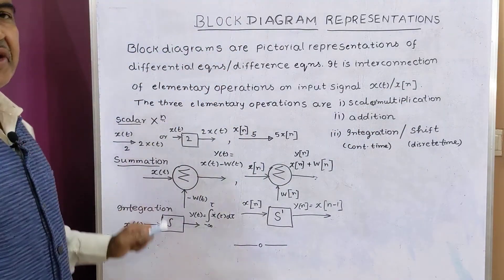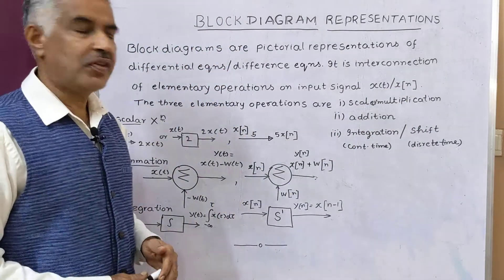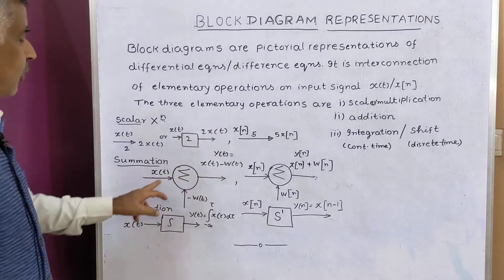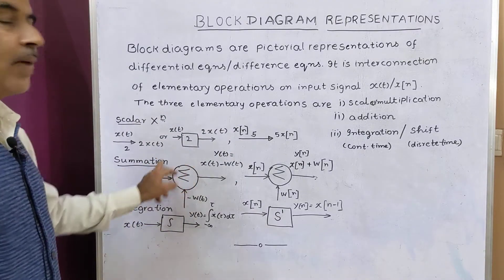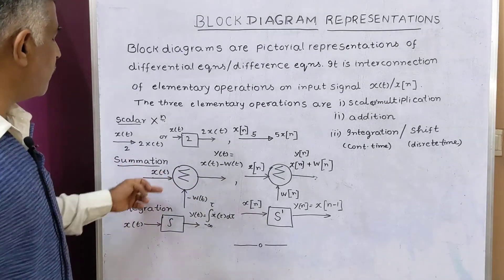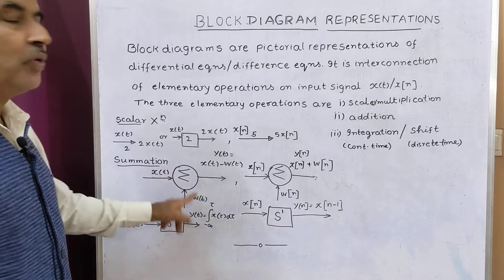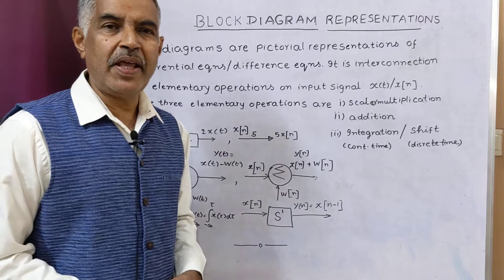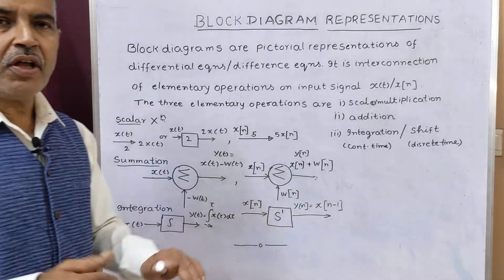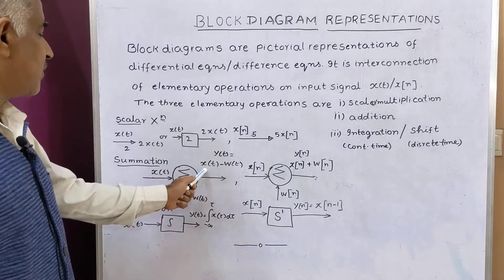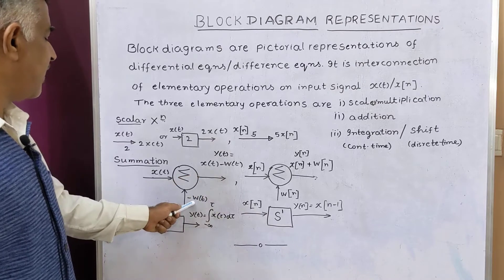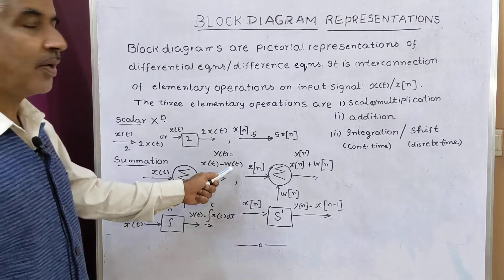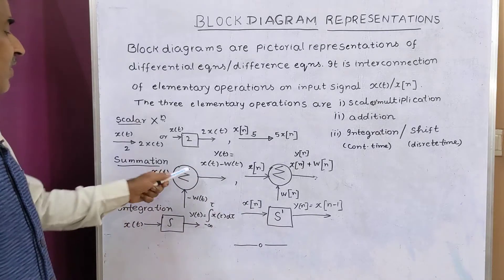Number two, summation of signals. So here for a continuous time system, this is called summer. So there are two input signals, x(t) and w(t). So w(t) is bearing minus sign. So addition of two signals, that is x(t) plus minus w(t) or x(t) minus w(t). This is what is called as summer.